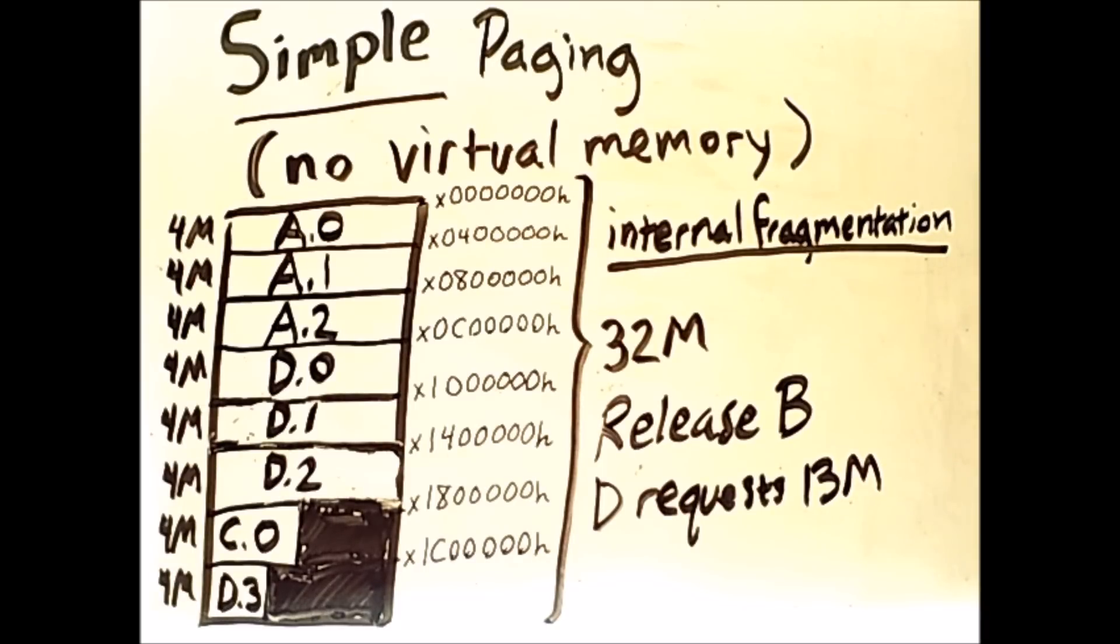Now, to keep track of all of this information, we actually need a special structure that is also stored in memory called a page table. Now, technically, in my small example here, I've completely filled the memory, and I'm not showing where the page table is stored, but just assume that the page table I'm about to show you is actually stored in memory somewhere in a real system.